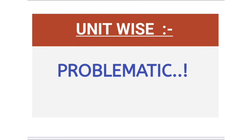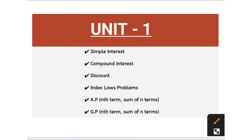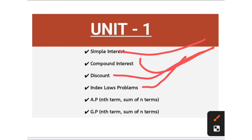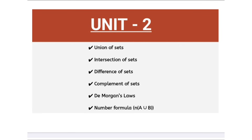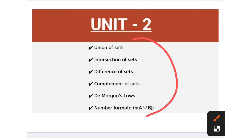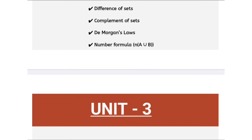Now we will discuss unit-wise problematic methods. From unit number one, you need to learn simple interest, compound interest, discount, index, loss, AP and GP. Out of these six, simple interest, compound interest, AP and GP are the four most important problematic methods — we can expect the problematic question related to these methods from unit number one. In unit number two, union of sets is most important and De Morgan's law is also most important — try to prepare the problematic methods related to unit number two.